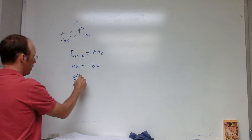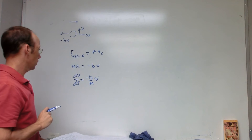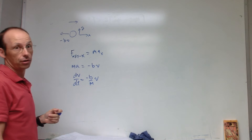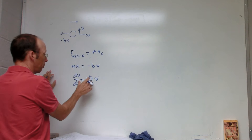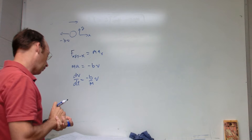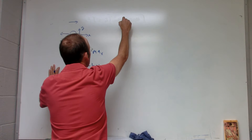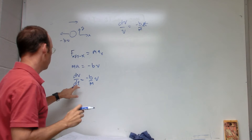So if I write F_net x = m·a_x, I get m·dv/dt = -bV, which gives dv/dt = -(b/m)·V. I now have a differential equation — the derivative of v depends on the value of v. I can make this variable-separable by getting all the V terms on one side and all the non-V terms on the other: dV/V = -(b/m)·dt.